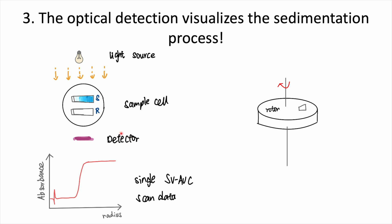The clever part is that this detector would actually scan across the entire radial length of the cell — from the inside of the cell closest to the center of rotation, to the outside edge furthest from the center of rotation. It measures the light intensity at many points along this radial direction. This information is then converted into a plot where absorbance is on the y-axis and radial position is on the x-axis. This graph shows a single scan, meaning a single snapshot of our sample in time. You can already see regions where the absorbance is higher, indicating a higher concentration of molecules in that region, and a very sharp step that shows the boundary formed by our sedimenting particles.